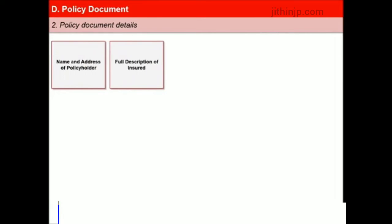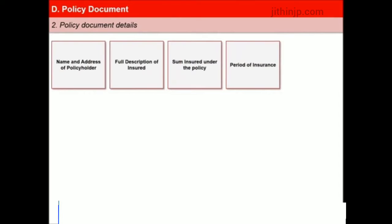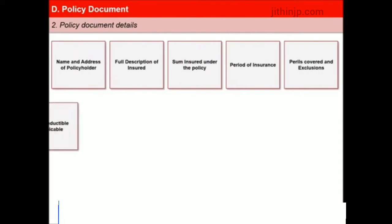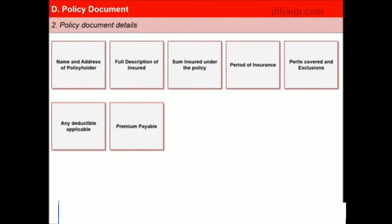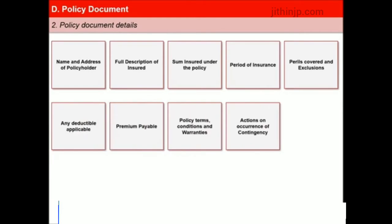The policy should include full description of the persons or interest insured, the sum insured under the policy person and/or peril wise, period of insurance, perils covered and exclusions, any excess or deductible applicable, premium payable and the basis of adjustment if the premium is provisional, policy terms, conditions and warranties, action to be taken by the insured upon occurrence of a contingency likely to give rise to a claim, and the obligations of the insured and rights of the insurer upon such an event.